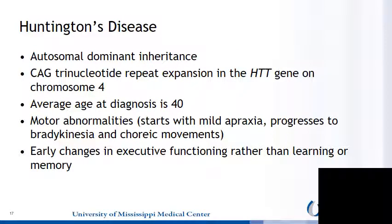Huntington's disease is another etiology of neurocognitive disorders. It is noted for its autosomal dominant inheritance pattern, with CAG trinucleotide repeat expansion in the Huntington gene found on chromosome 4. The average age of diagnosis is 40. There are significant motor abnormalities, starting with mild apraxia and progressing to bradykinesia and choreic movements. From a cognitive standpoint, there are early changes in executive functioning that are more predominant than learning or memory changes.